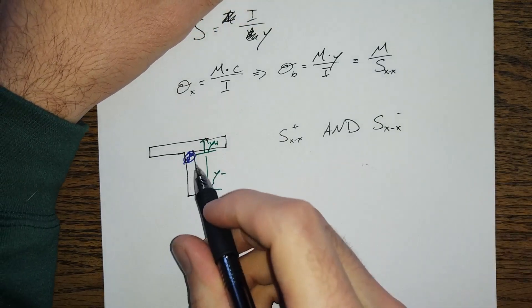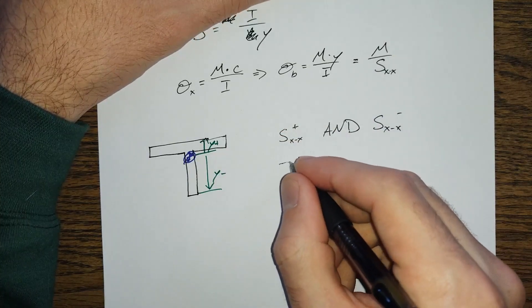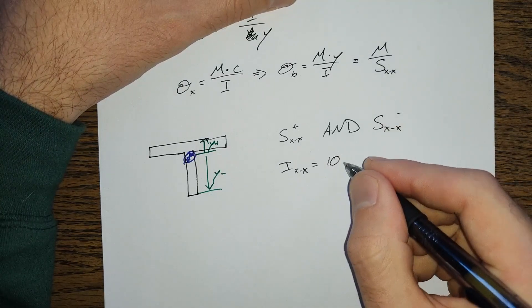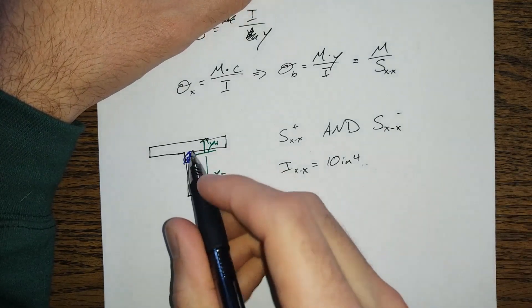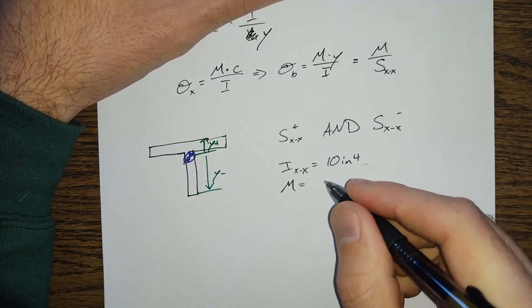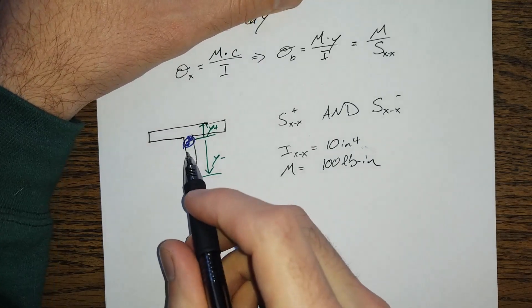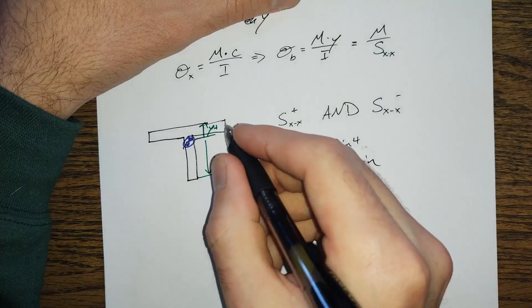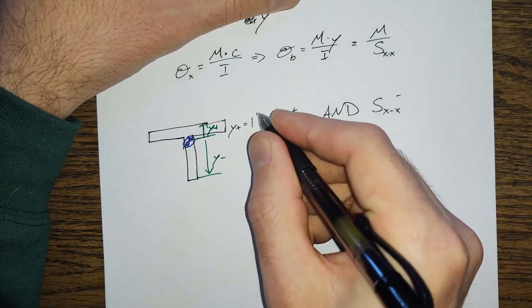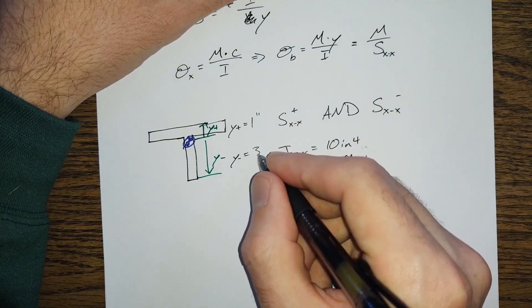So if we know that this shape has, just pulling numbers out of nowhere here, an IXXX of 10 inches to the fourth, and we've applied a moment of 100 pound inches. And we've got these Y distances here. We'll say that Y plus is equal to 1 inch and Y minus is equal to 3 inches.